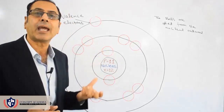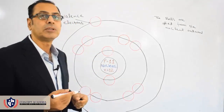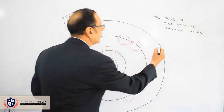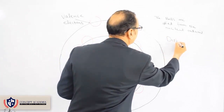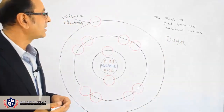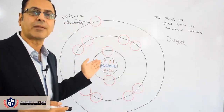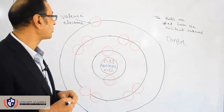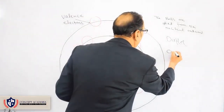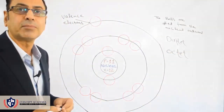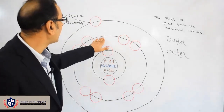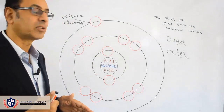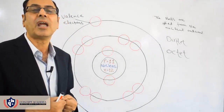The first shell can maximum have 2 electrons, and this is called a duplet. The second shell can maximum have 8 electrons, and this is called an octet. So the second shell can maximum accommodate 8 electrons.